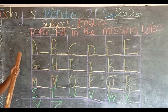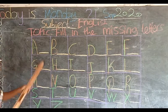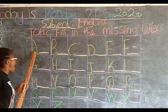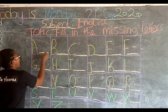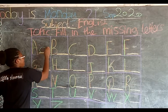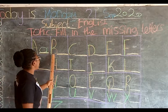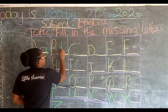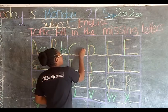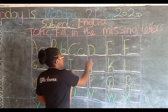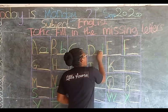Now let's go to our exercise. We are going to fill in the missing small letters. This is capital A and the lowercase of capital A is small letter a. This is capital B and the lowercase is small b. Capital C, the lowercase is small c. Capital D, the lowercase is small d.